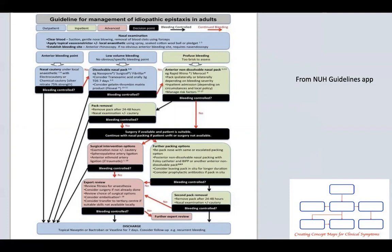Blue boxes represent outpatient management, green inpatient, and red specialist management requiring senior ENT decision-making. Black boxes show decision points where bleeding control is checked. Arrows point to the next steps. Black show if bleeding is controlled, and red arrow if not controlled.